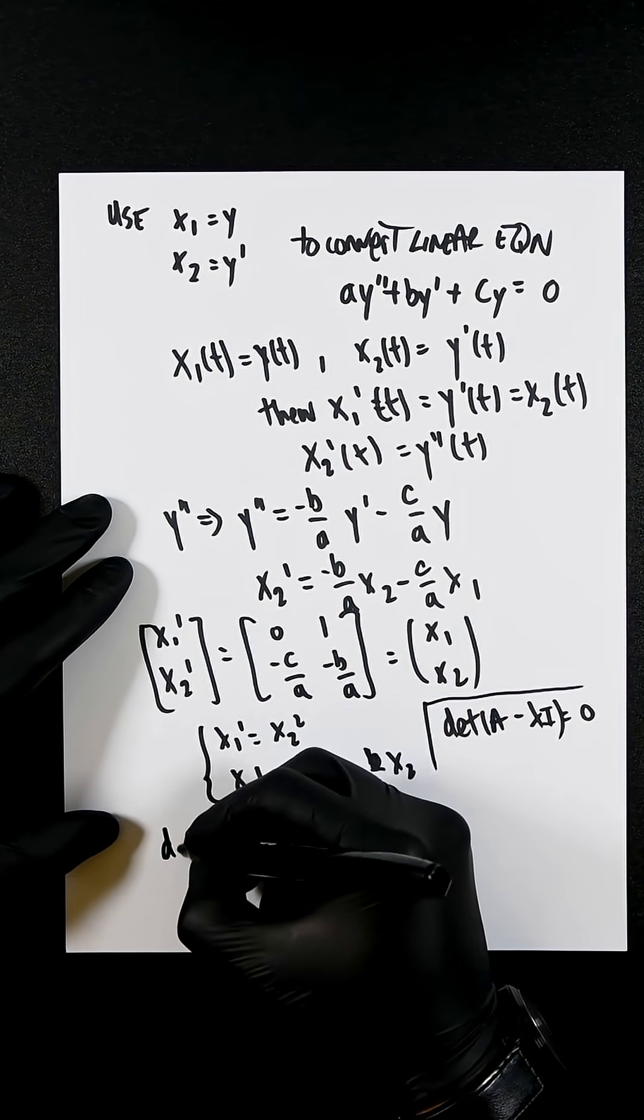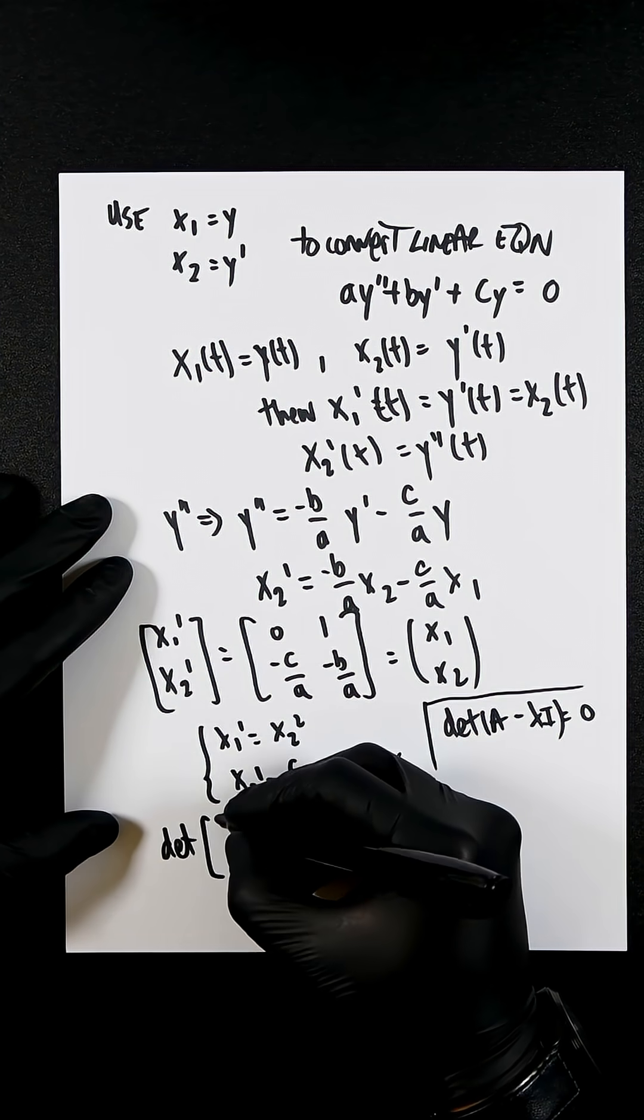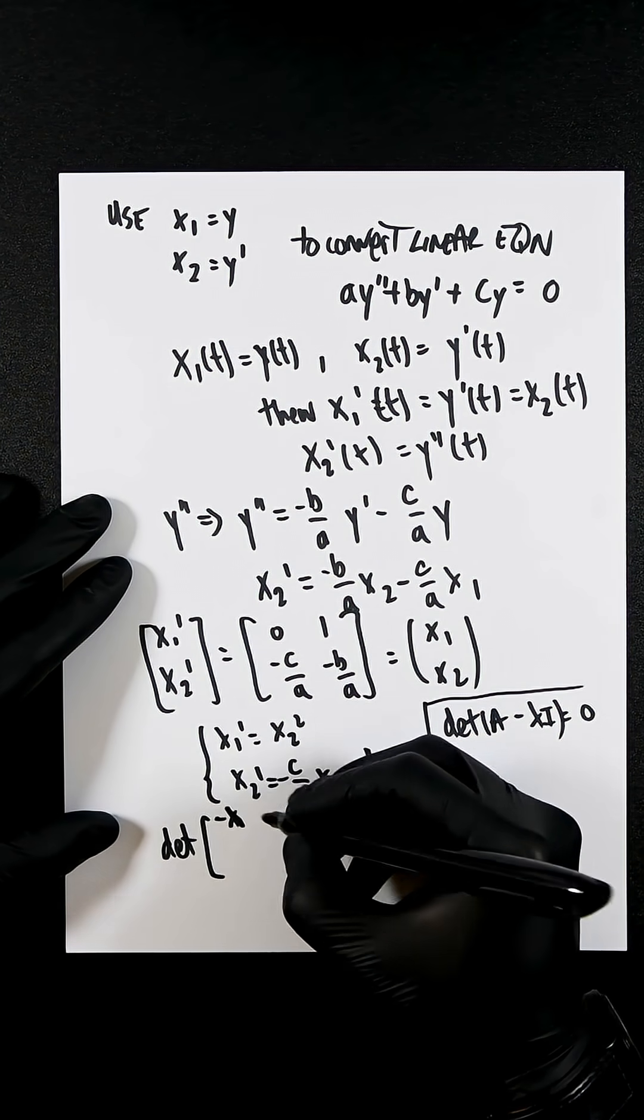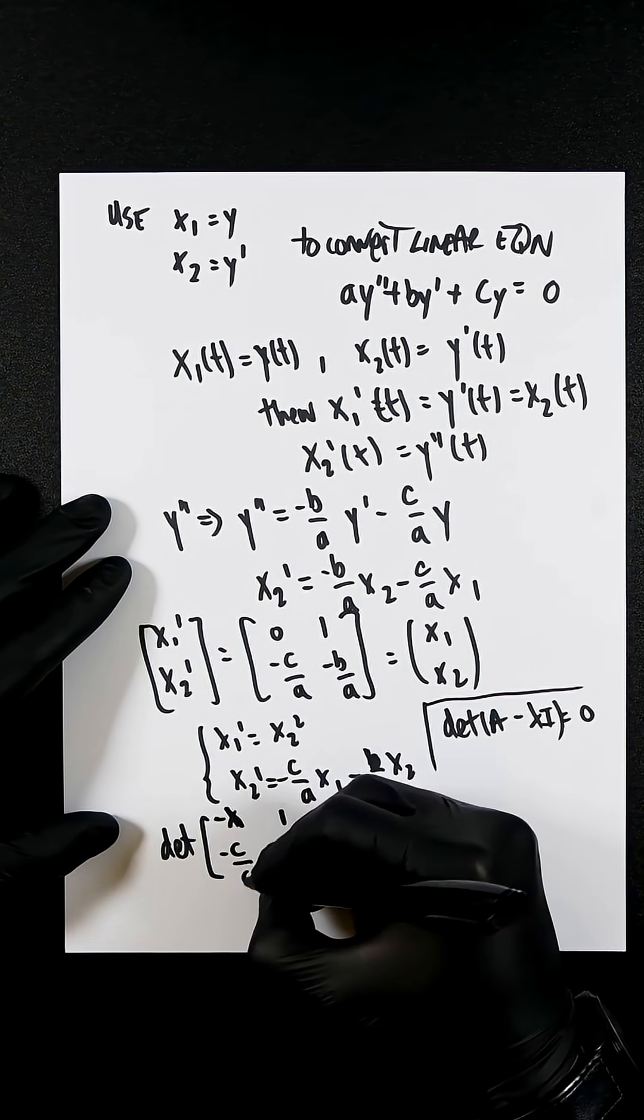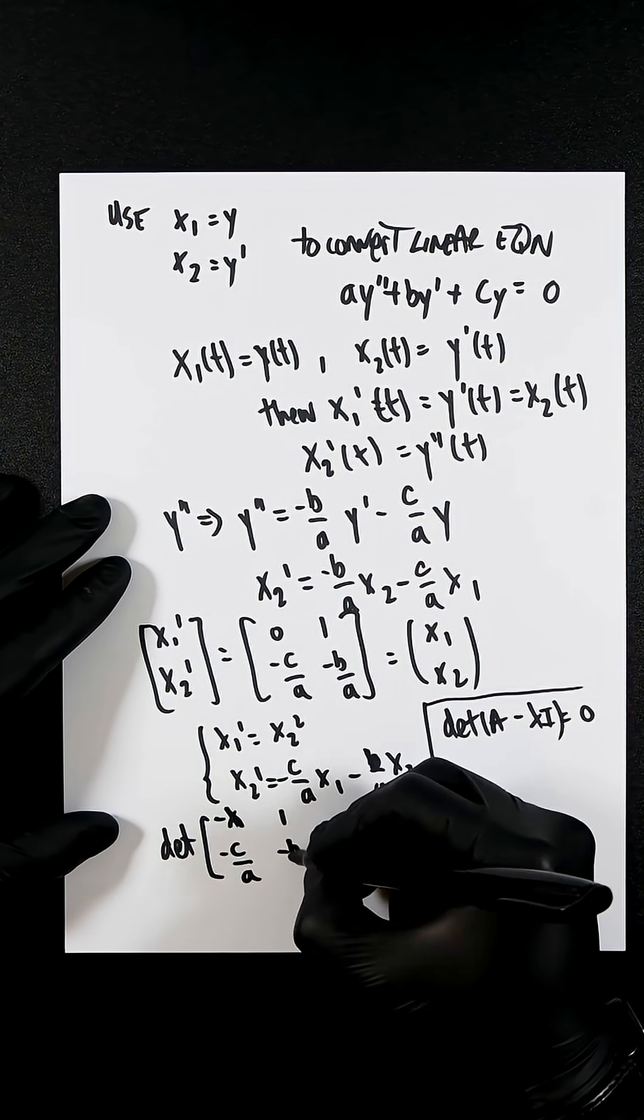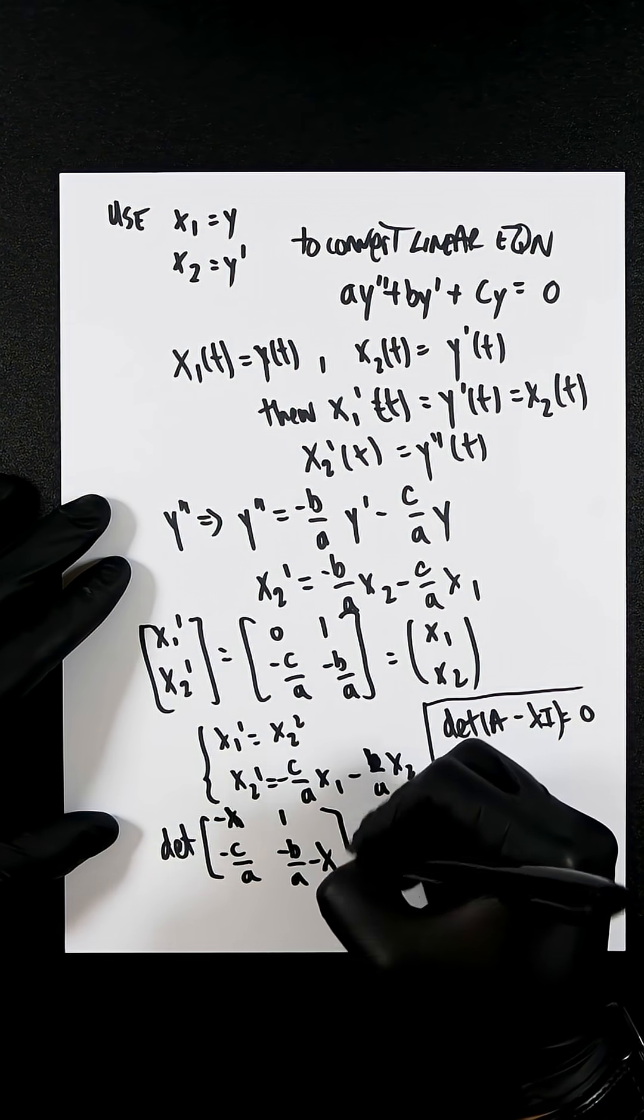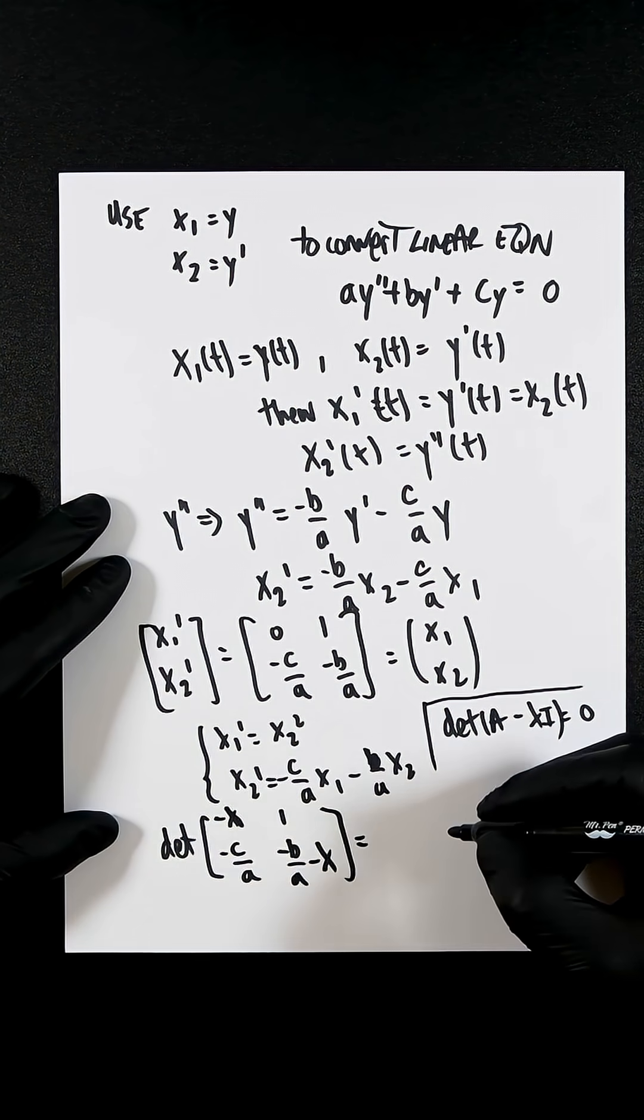So you're going to get the determinant of minus lambda, 1, minus c over a, minus b over a minus lambda. And then you find out what the determinant of that is.